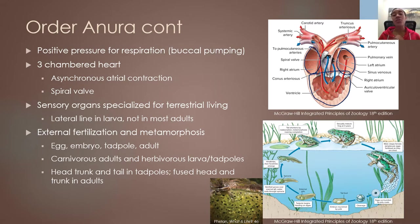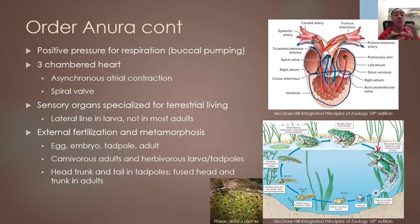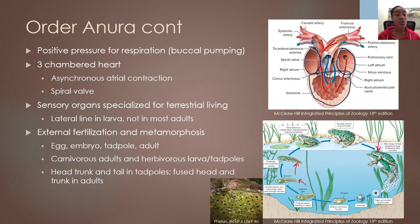Anurans undergo external fertilization followed by metamorphosis into the adult form. The male and female join in a position called amplexus, where the male grasps onto the back of the female so that as the female releases her eggs, the male releases sperm to fertilize them. The eggs stick to a substrate and rapidly undergo cell division, forming a blastula, then a young tadpole. The tadpole then goes through various stages of metamorphosis, eventually losing its tail, gills, and lateral line, while gaining legs and lungs, eventually becoming a fully or partially terrestrial adult.